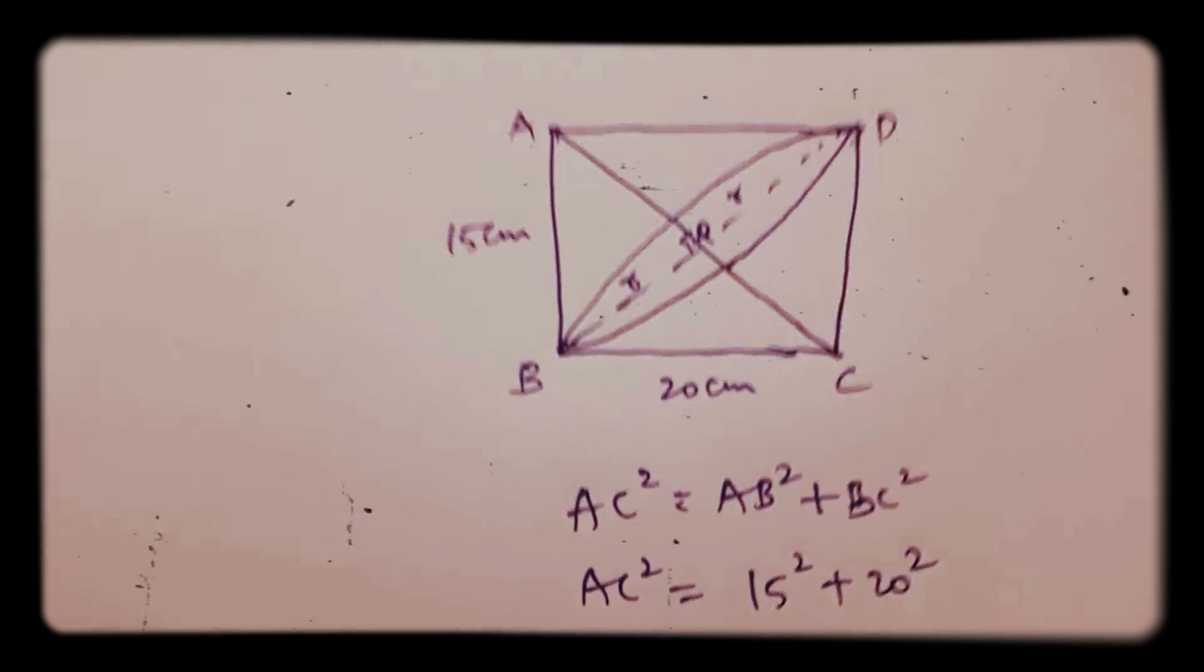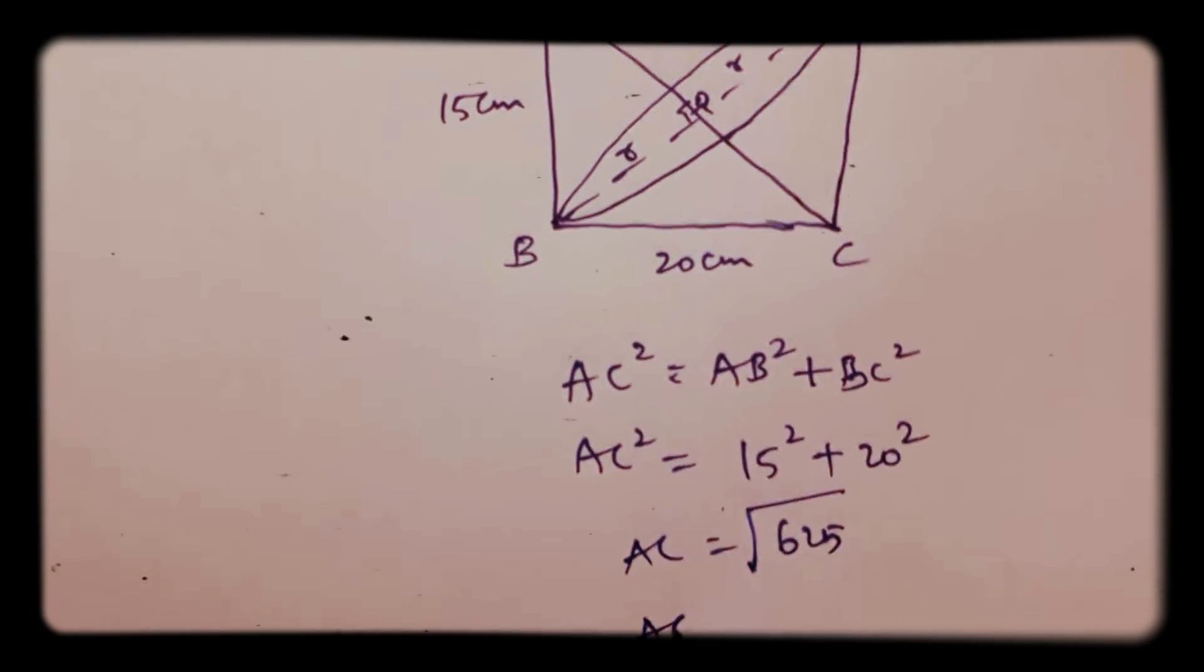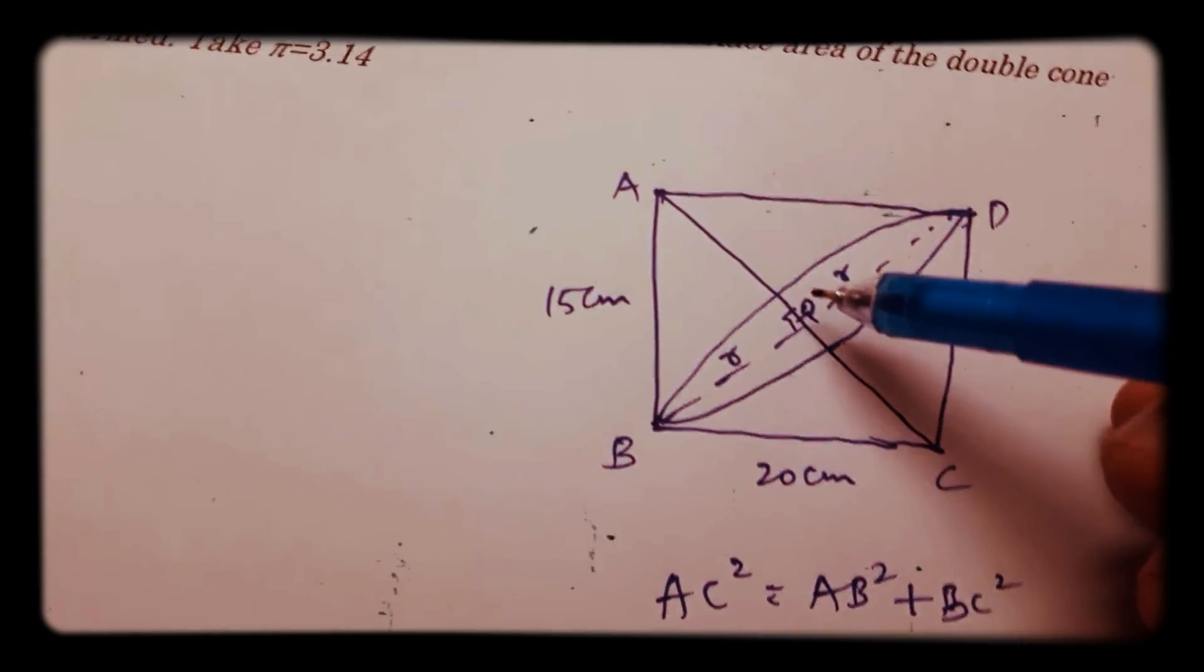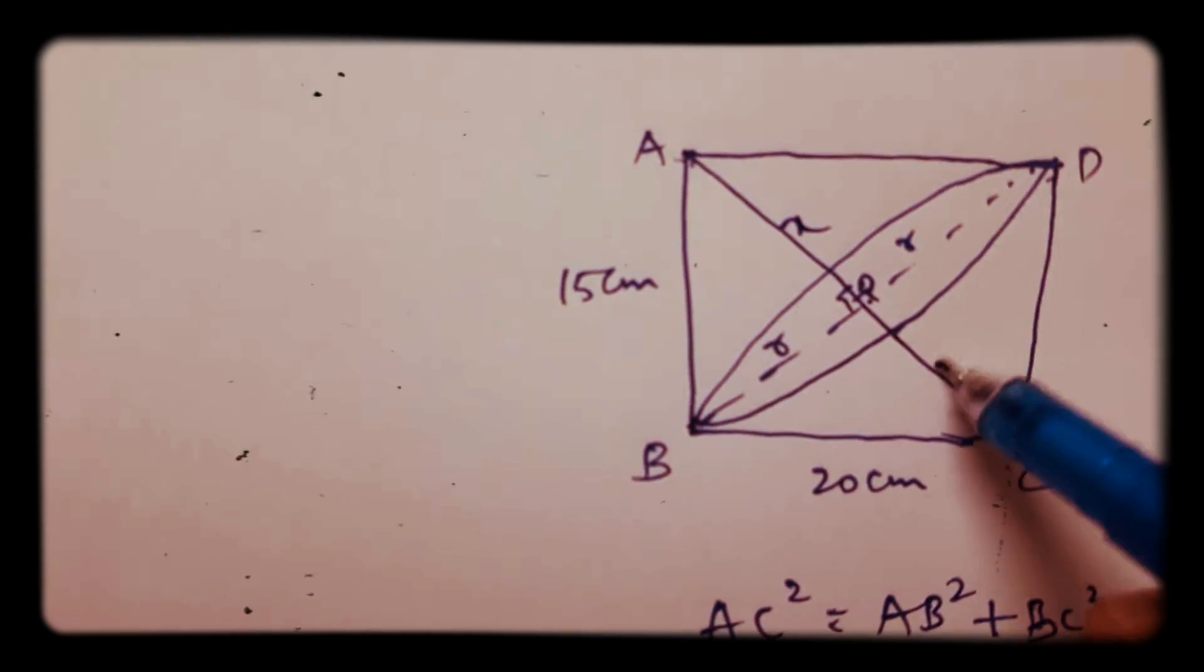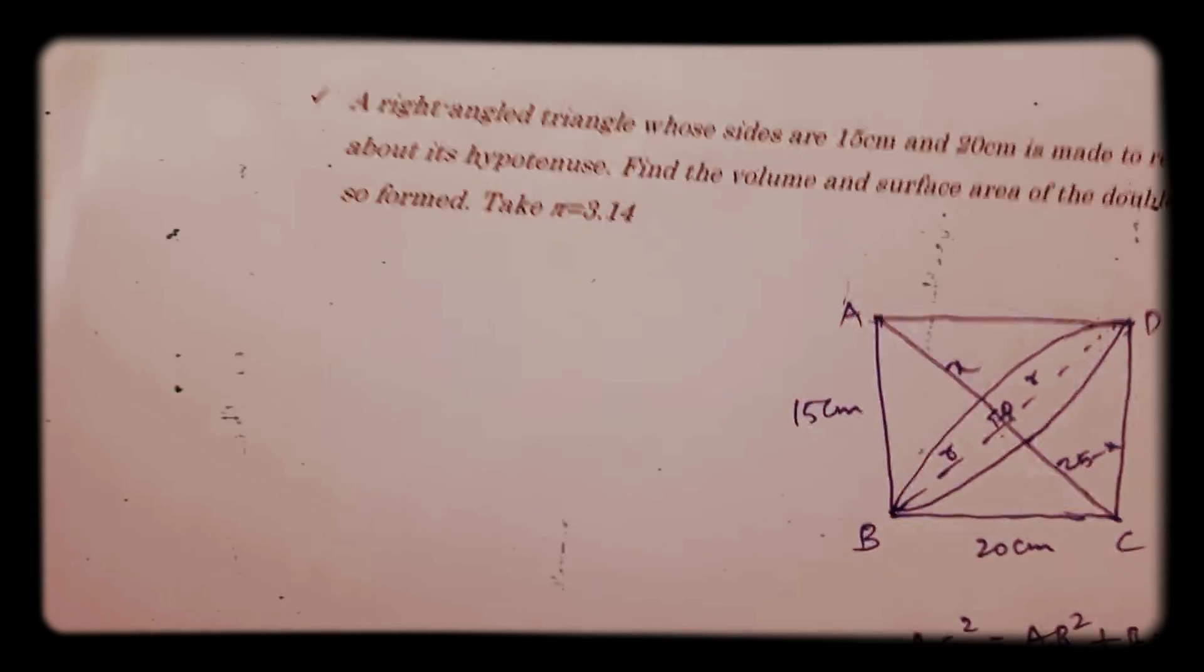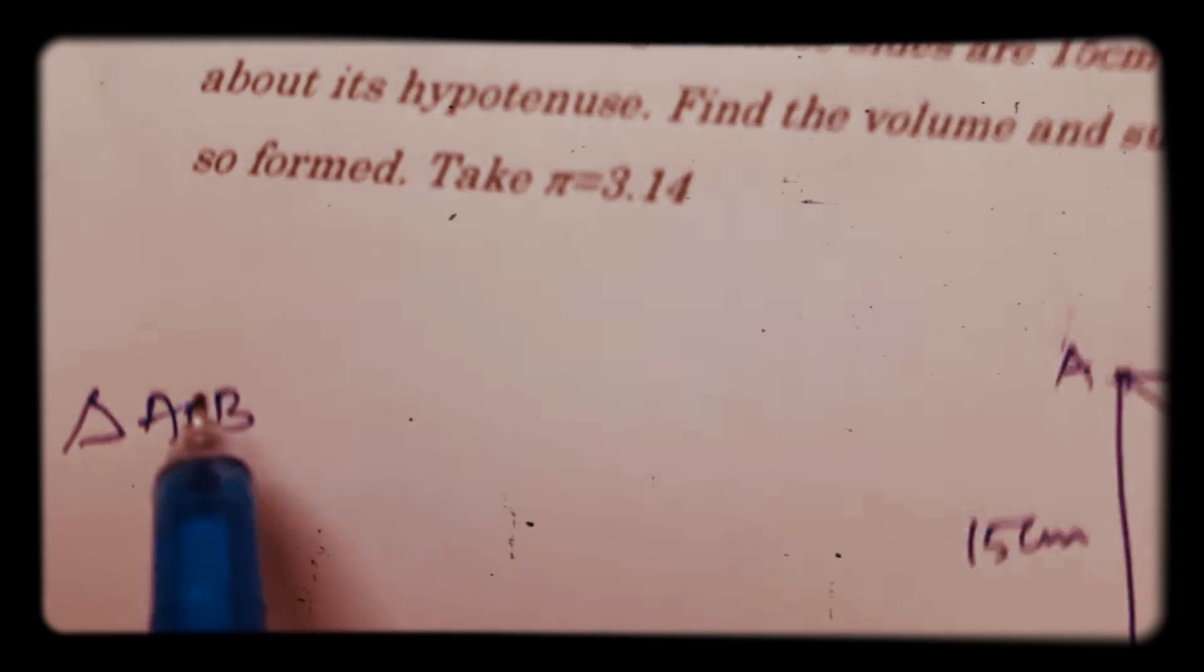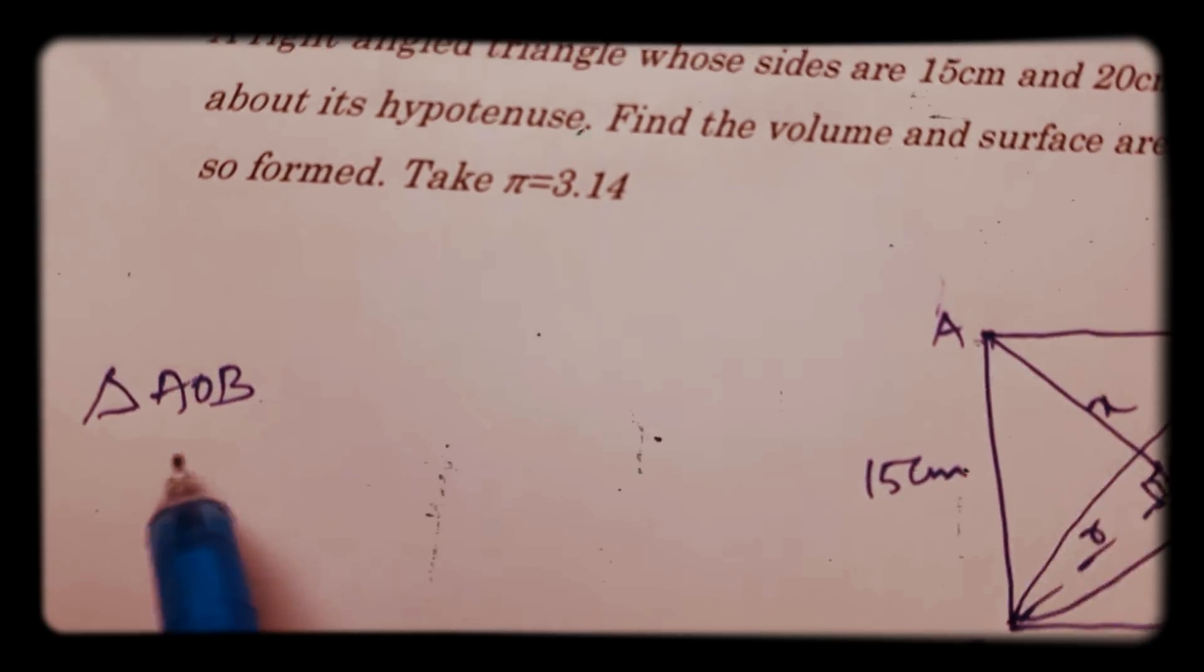So if AC is 25, AO I'll consider as X, then this will be 25 minus X. Now take triangle AOB, here is 90 degrees so hypotenuse is AB, apply Pythagoras theorem.